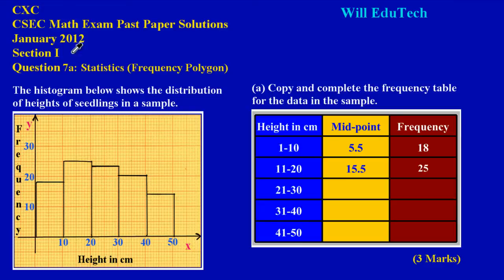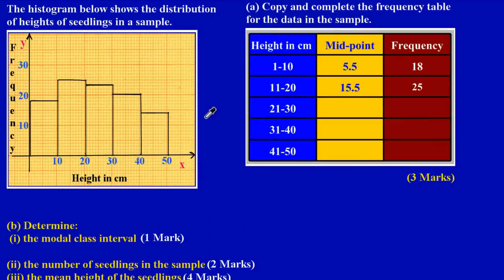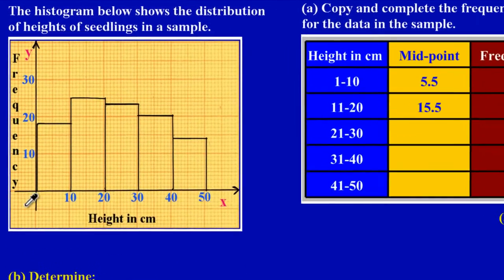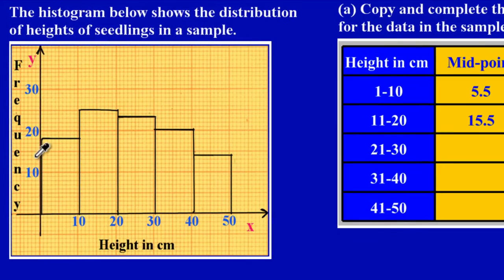This question was taken from the CSEC math exam past paper, January 2012. The question states that the histogram below shows the distribution of heights of seedlings in a sample. On the y-axis we have our frequency — meaning how often the occurrences happen — and on the x-axis we have our height in centimeters.